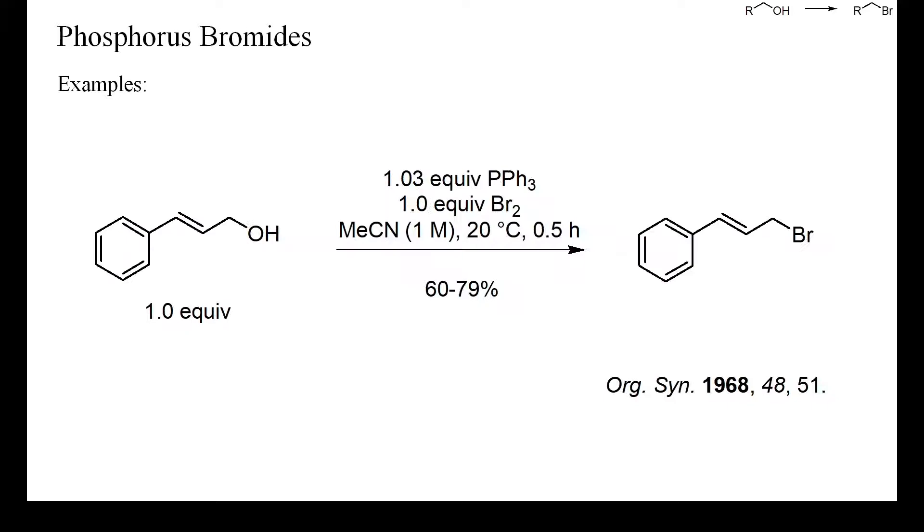Here, cinnamyl alcohol was converted into the bromide, this time with acetonitrile as solvent and without any base. The substitution proceeded quickly at room temperature and without allylic inversion.